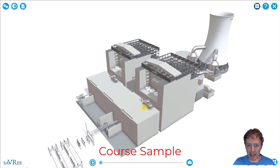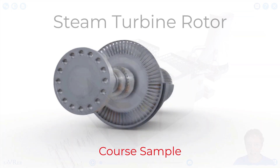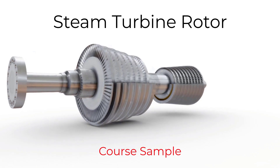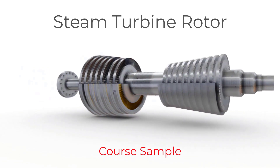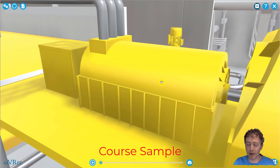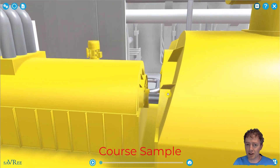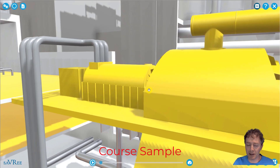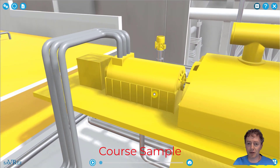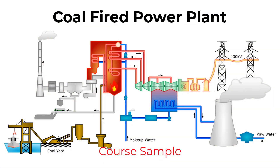A force is exerted on the blades and this force causes the steam turbine rotor to rotate. When it rotates, it also causes a rotor within a generator to rotate as well. The generator rotor is coupled to our steam turbines via this central shaft, so when the steam turbines rotate, the generator rotor rotates too, and we are generating electricity. We can deliver that electrical power via a transformer and a substation to our end consumers.